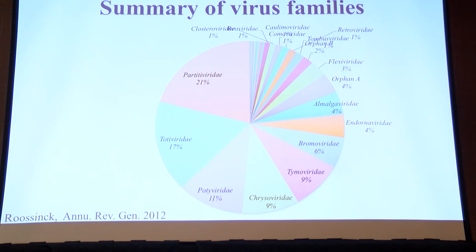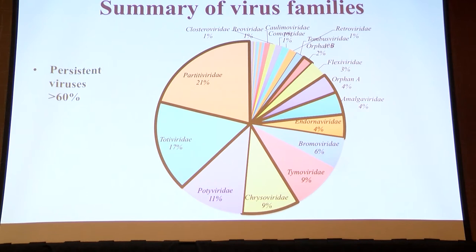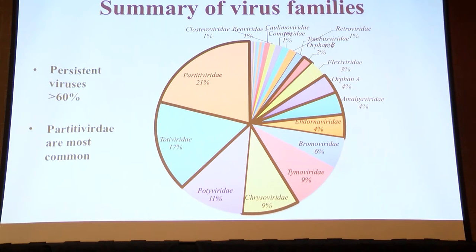This pie chart summarizes the various virus families and their percentage of the total found in these studies. The ones outlined in black are what we call persistent plant viruses — over 60% of what we find are persistent plant viruses. You've probably never heard of any of these because nobody does work on them. What you hear about are the acute viruses that cause disease, which everybody has studied. But I've become very interested in persistent plant viruses. The most common family in this group is the Partitiviridae.